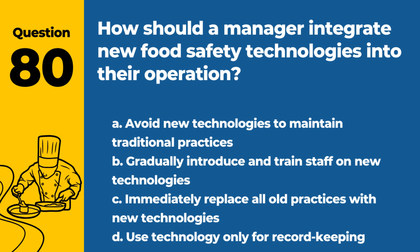Question 80. How should a manager integrate new food safety technologies into their operation? A. Avoid new technologies to maintain traditional practices. B. Gradually introduce and train staff on new technologies. C. Immediately replace all old practices with new technologies. D. Use technology only for record keeping. Answer: B. Integrating new food safety technologies should be a gradual process, with proper training for staff to ensure they are used effectively and enhance food safety practices.